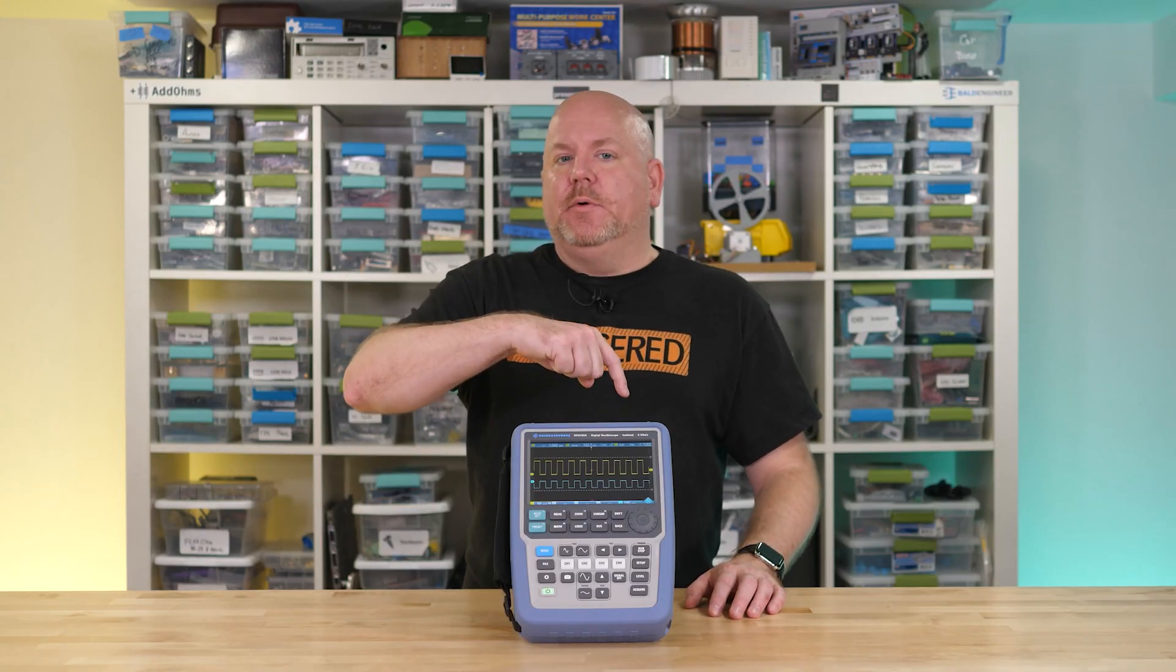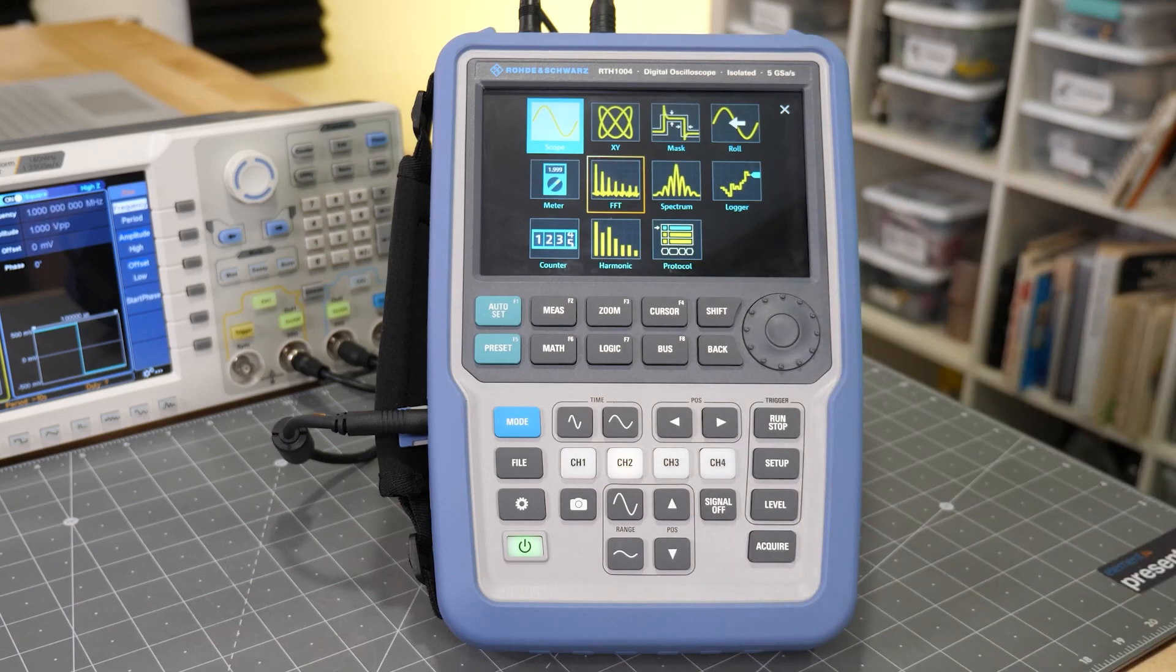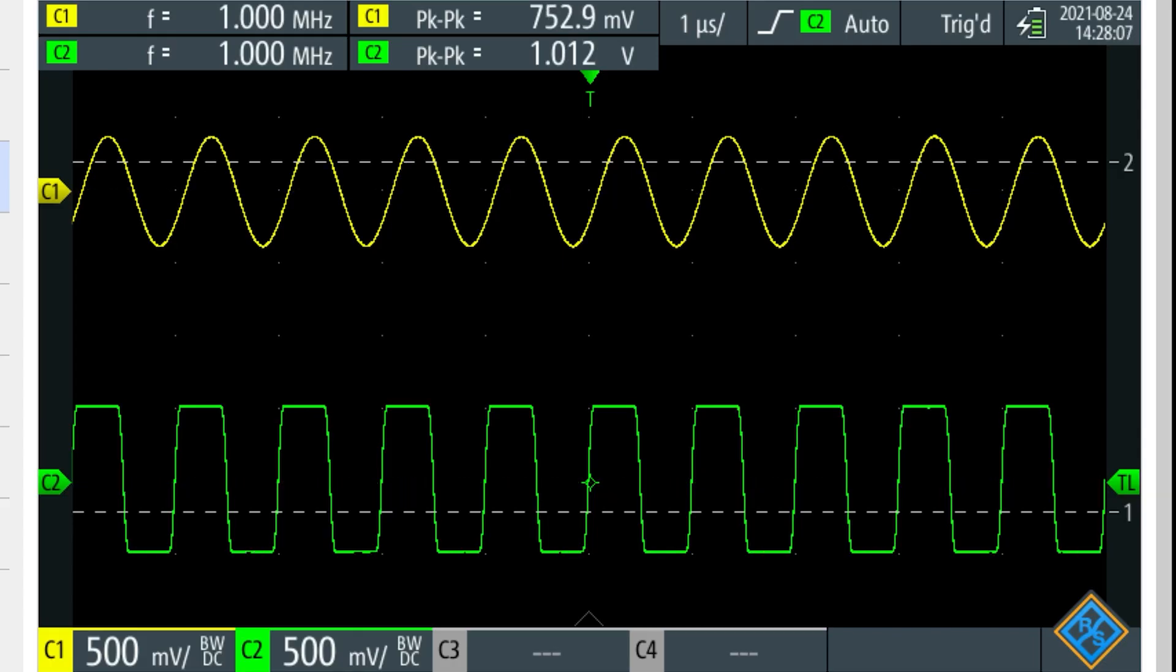Now, let's go back to the time domain to see another problem that I mentioned. Remember, the ARB is outputting 1 volt peak-to-peak, but we are only measuring about 700 millivolts peak-to-peak on the sine wave channel.